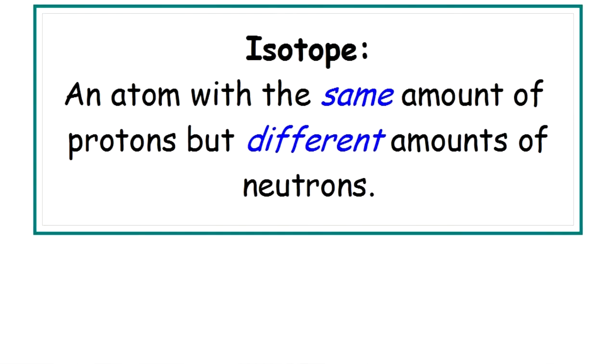Here's a video for A-Level. It's about isotopes. I'll just tell you the definition first of all, because this is what you need to know — two marks in the exam. An isotope is an atom with the same number of protons but a different number of neutrons, or the same atomic number but a different mass number.